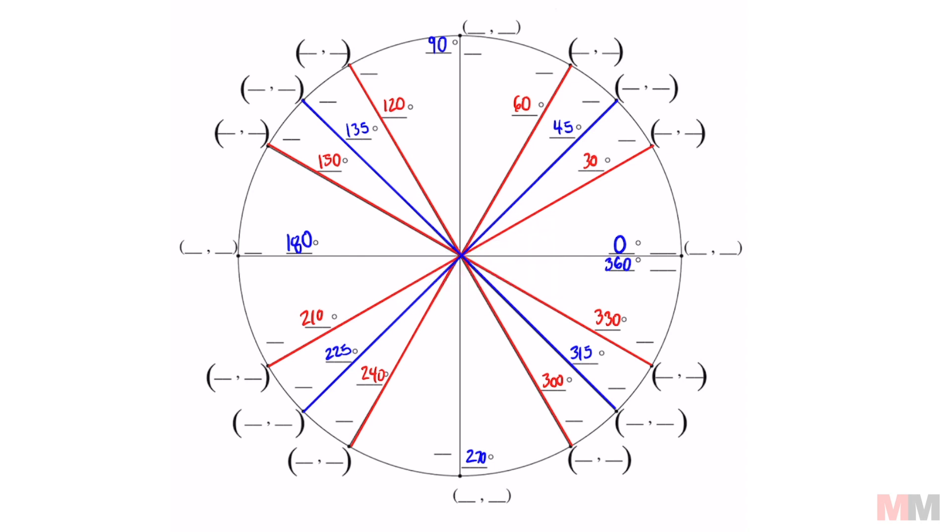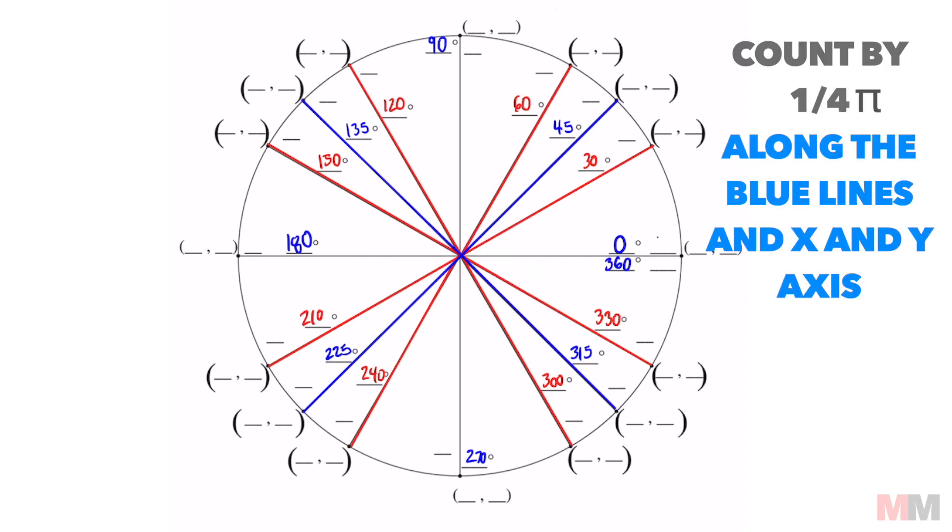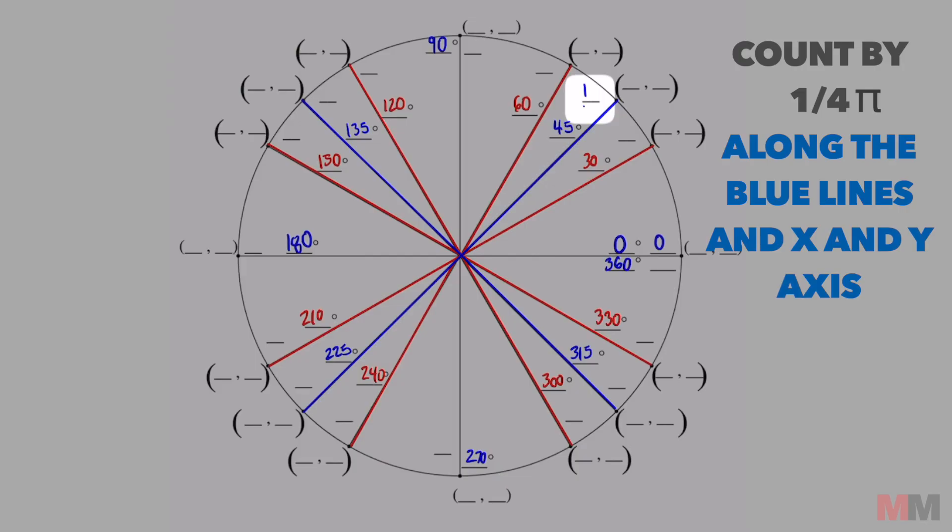In the unit circle we're in radians now. We're going to start with zero. Every blue line is one-fourth. Similar pattern to what we did with degree measurements. I'm going to do it counting by one-fourth. One-fourth pi.